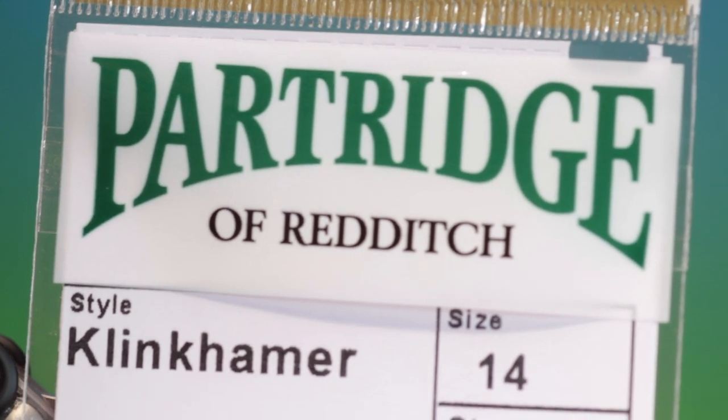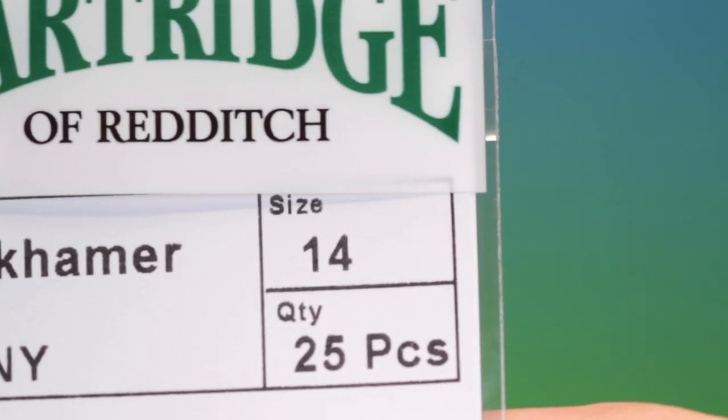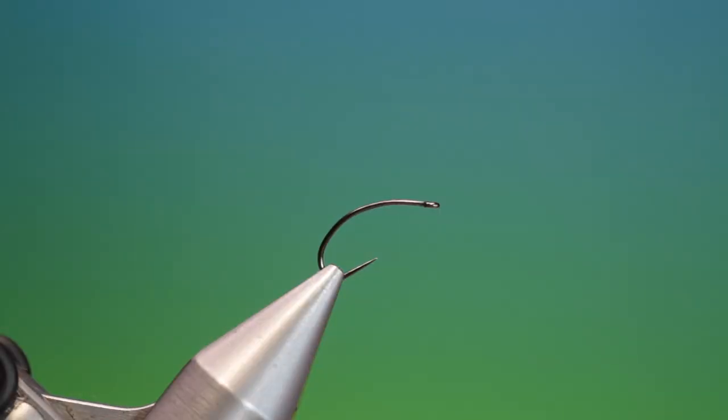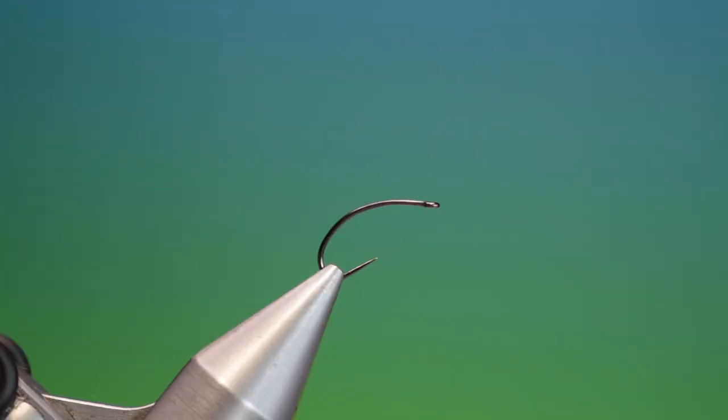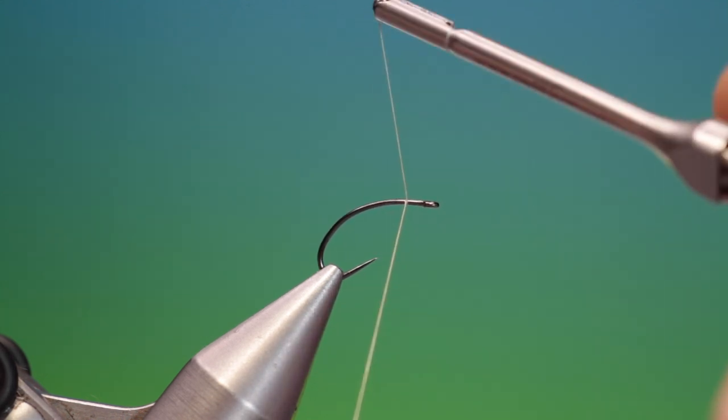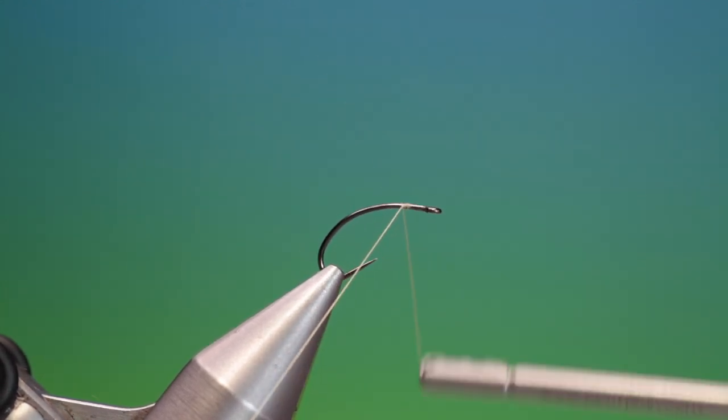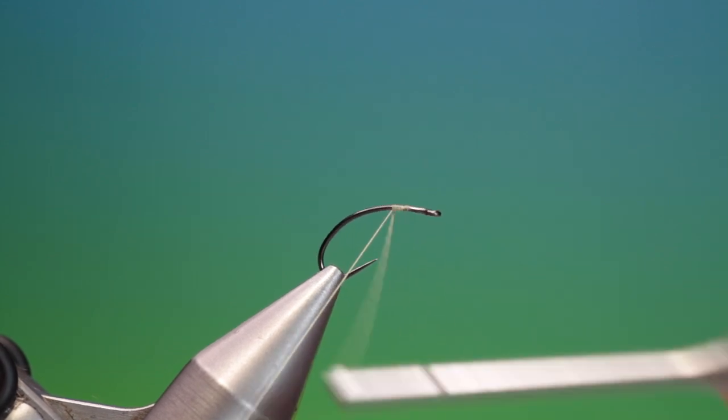We'll start with a Partridge Klinkhammer size 14 barbless hook. I've got yellow 40 knot shear. This is the AP pontooner merger, André Payence pattern.